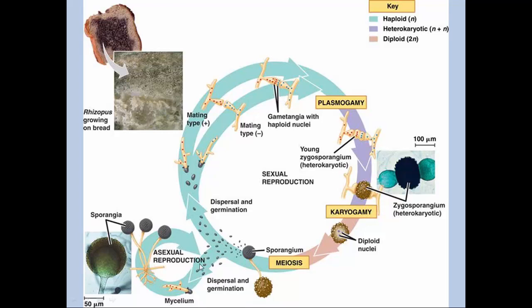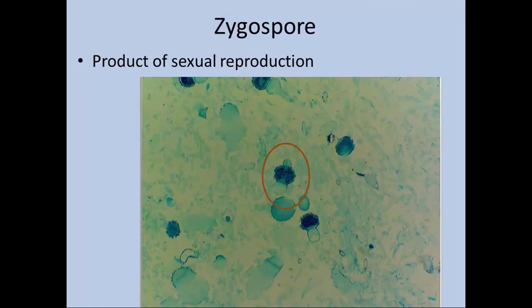Now let's look at some real pictures of these structures. This is showing you a picture of a zygospore, viewed under the low power lens. This again shows the zygospore, and on these two sides of the hyphae you can see the two hyphal types that fused together resulting in the formation of the zygospore.